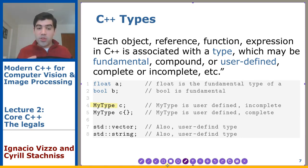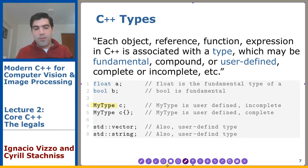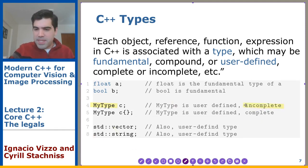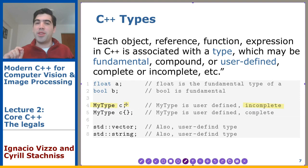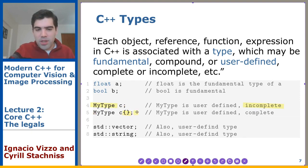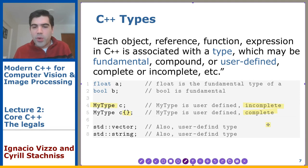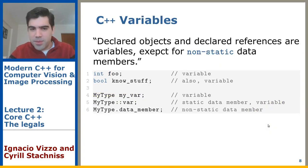User-defined types are types that you define yourself — behind the scenes this is a class, which we'll reach in three or four weeks. The idea of C++ is that you can create your own types and express the intent of your program much better using your own type system. An incomplete type is just a type declaration with no definition. When you have all the implementation details, we call it a complete type.